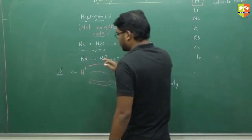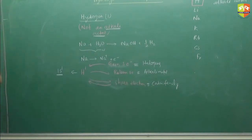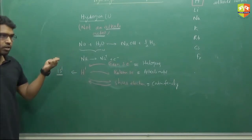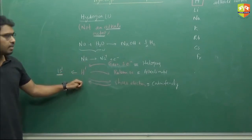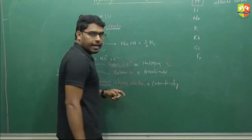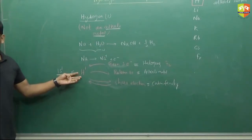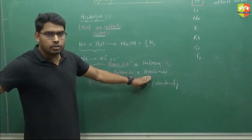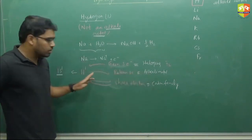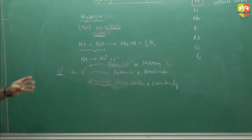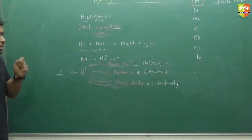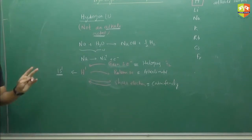In NCERT it is given — just go through it — that hydrogen has a few properties similar to halogens: halogens have the property to gain one electron and have high electronegativity; hydrogen also has tendency to gain one electron. Halogens are diatomic — F2, Cl2, Br2 — and hydrogen is also diatomic, H2. Similarly, hydrogen has properties similar to alkali metals: it is electropositive in nature, and has reducing character. These properties similar to halogens, alkali metals, and carbon family are given in NCERT — just go through it, it's not that important.